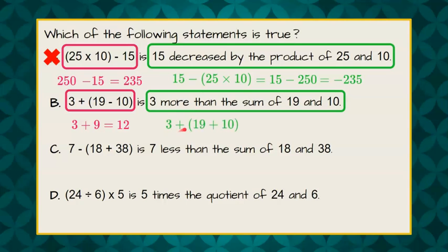Now let's write this numerically. 3 more than the sum in parentheses 19 plus 10. 19 plus 10 is 29, so we have 3 plus 29, which is 32. That is not a true statement. Those are not the same. So therefore, it cannot be B.